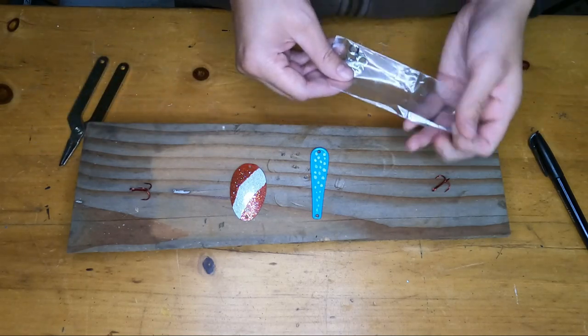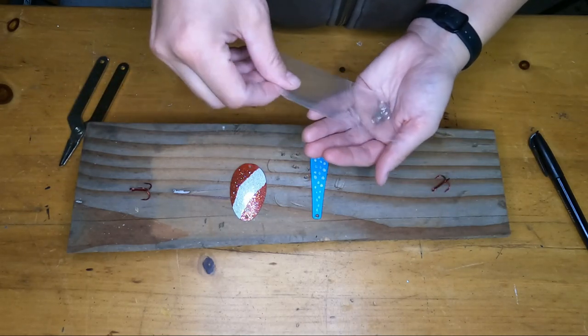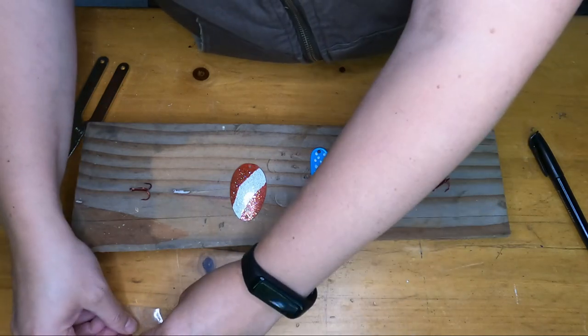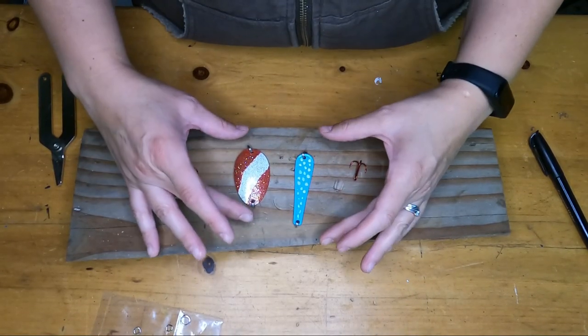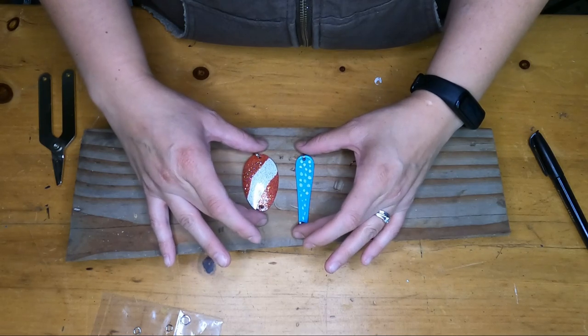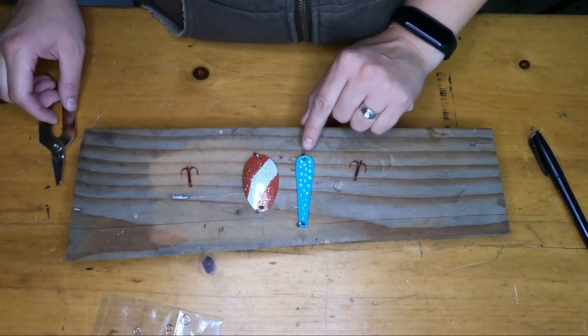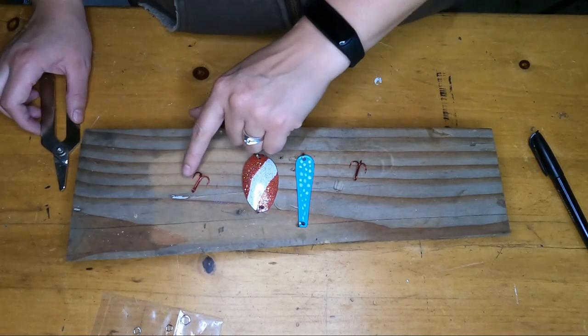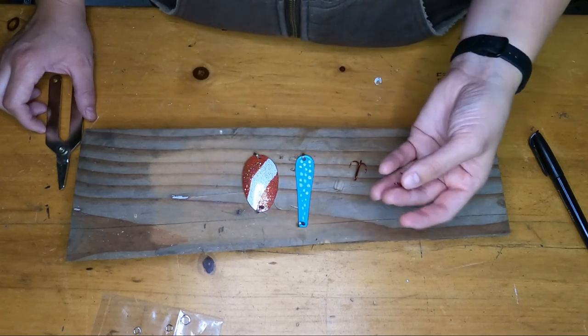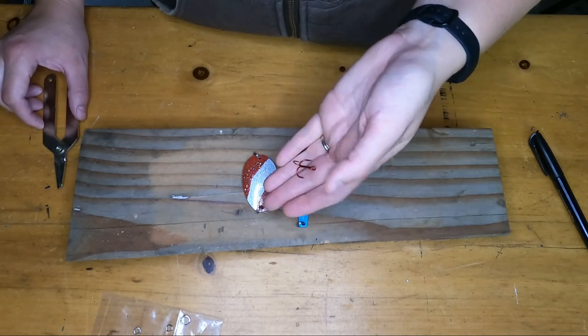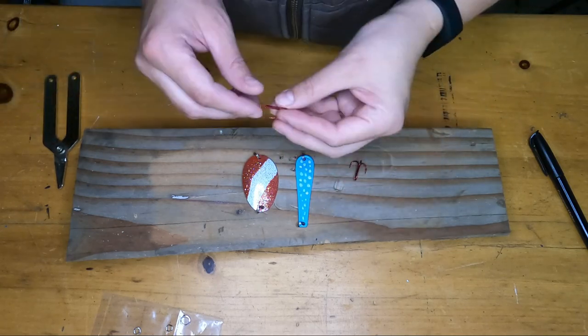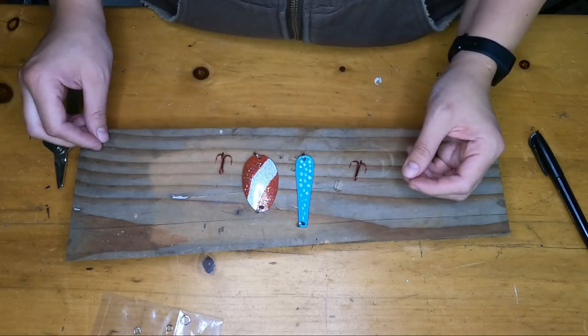Now what we're going to do is take our split rings. Now I've attached split rings to the top and the bottom of each of these lures. Now to the bottom of each of them I'm going to attach a treble hook. Now I just had these red ones on hand so that's what I'm using, but there by no means doesn't need to be red. That's just ones that I happen to have on hand right here and ready.